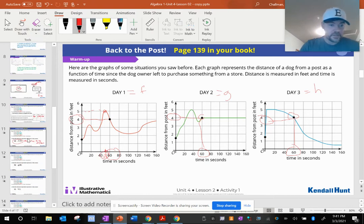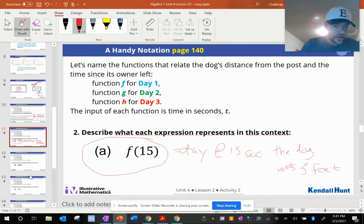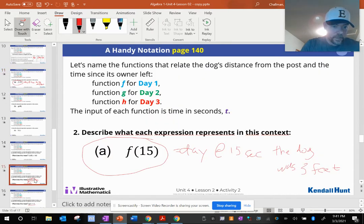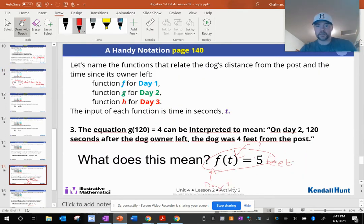So if I scroll back down to our function notation, we could say we were five feet away at 50 seconds. So this is actually just saying something different. That's the gist of function notation.